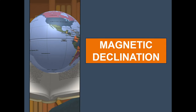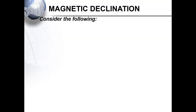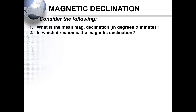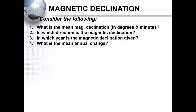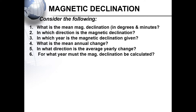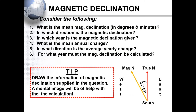Magnetic declination. Consider the following: what is our mean magnetic declination, in which direction, in which year is the declination given, what is our mean annual change, in what direction is the average yearly change, and for what year must we calculate the magnetic declination? Magnetic declination can be broken into shorter questions — you may be asked to name the magnetic declination on the map, the mean annual change, and then calculate the updated magnetic declination. A tip is to draw the information given to help with a mental image for your calculation.